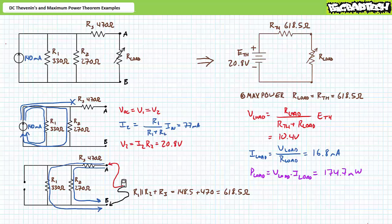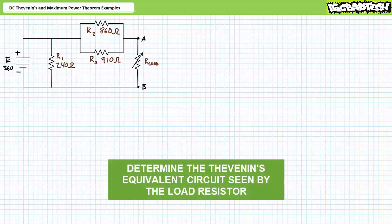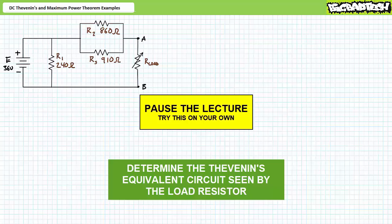All right, I believe we've accomplished our desired goals and can move on to the next illustrated example problem. Our next problem features a series-parallel combination of four resistive elements and a voltage source. Stage one necessitates we solve for the Thevenin's equivalent circuit seen by the variable load resistor. Once we've got these values, we'll move on to stage two and examine maximum power transfer. By all means, pause the lecture and try stage one on your own. If you're tracking, you should obtain the following results.